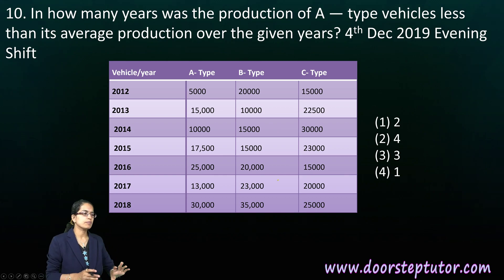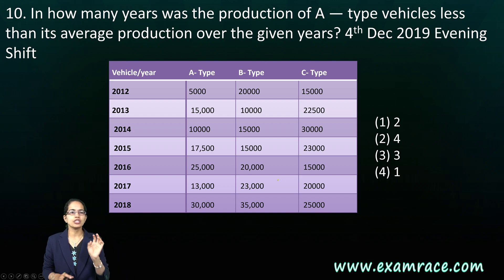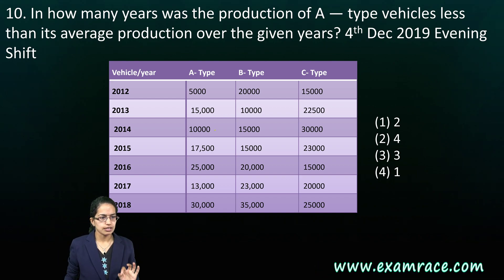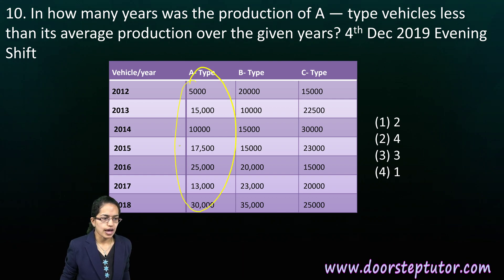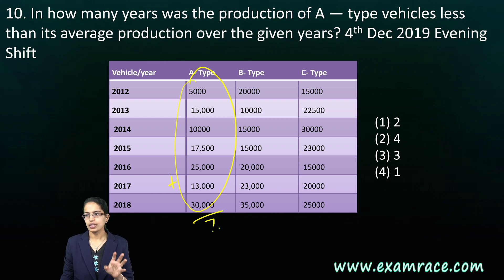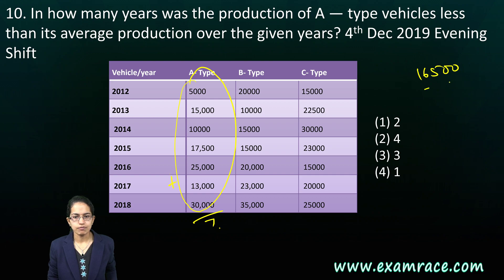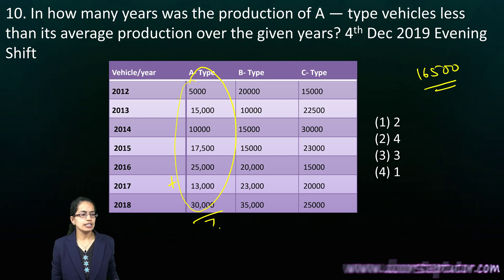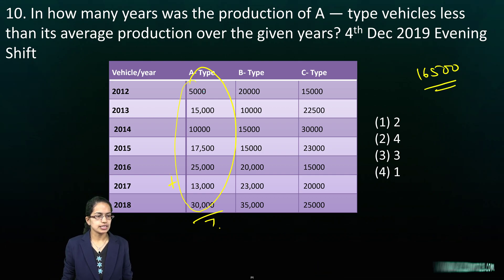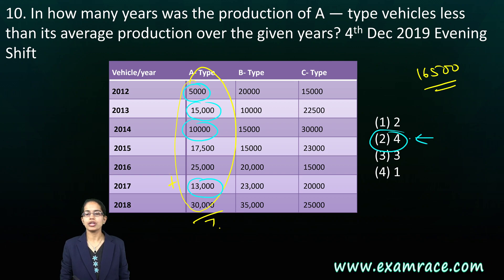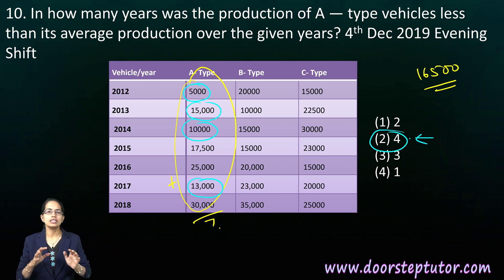The last question based on this table: in how many years was the production of A-type vehicles less than the average production over the given years? We add all the A-type values for 7 years, divide by 7 to get the average — say 16,500. Then we count the years where the value is less than 16,500: that comes out to 4 years, so 4 years is the right answer.